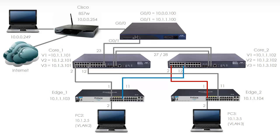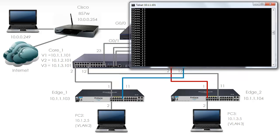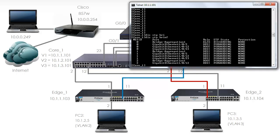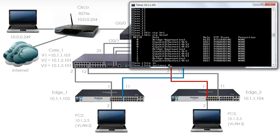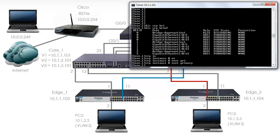Let's complete the diagram showing the forwarding and blocking ports with the configuration we've now completed. Previously spanning tree was blocking the 20 gig link. Let's look at Core 1, display STP brief. Bridge aggregation 1 is still discarding on instance 0, but it's forwarding on instance 1 and forwarding on instance 2. So let's change the priority for instance 0 - STP instance 0 root primary. It's important to remember that you still need to configure spanning tree for instance 0.